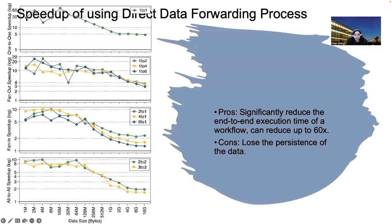We tested direct data forwarding with different data passing patterns: one-to-one, n-to-one, and n-to-n. The speedup of using direct data forwarding for small data sizes can go up to 60 times, and it achieves at least 2 times improvement for the largest data chunk with the full n-to-n transfer pattern. The direct data forwarding can significantly reduce end-to-end execution time, up to 60 times, but the disadvantage is potential loss of persistence for intermediate data. However, for pods processing huge data volumes with very small processing time, you can always quickly restart the pod.